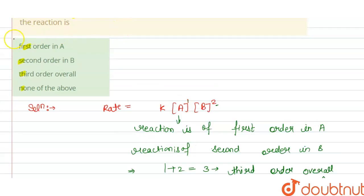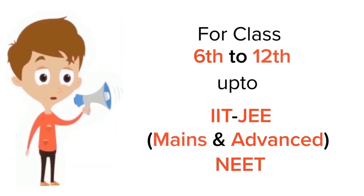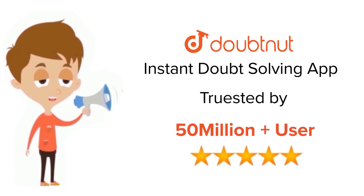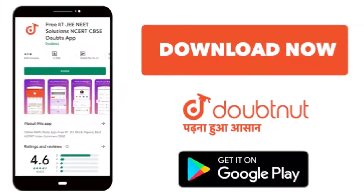So from this we can say that option A is correct, B is correct and C is correct. Thank you. For class 6 to 12, IIT and NEET level. Trusted by more than 5 crore students. Download Doubtnut app today.